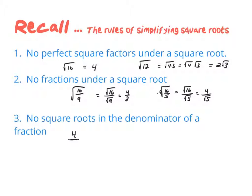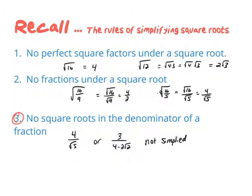Something like 4 over root 5, or even more complex expressions, are not simplified because they have a square root in the denominator. So this is what we're going to be focusing on today — how do we fix this?